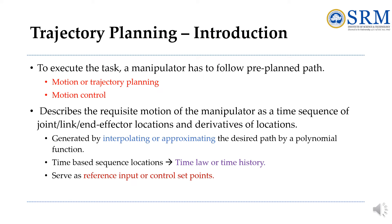To accomplish the task, a manipulator must have motion control. It has to follow the pre-planned path, and it describes the requisite motion of the manipulator as a time sequence of joint or end effector locations and derivatives of the locations. This can be generated by interpolating or approximating the desired path by a polynomial function, and it has a time-based sequence of locations that serves as reference inputs or control set points.